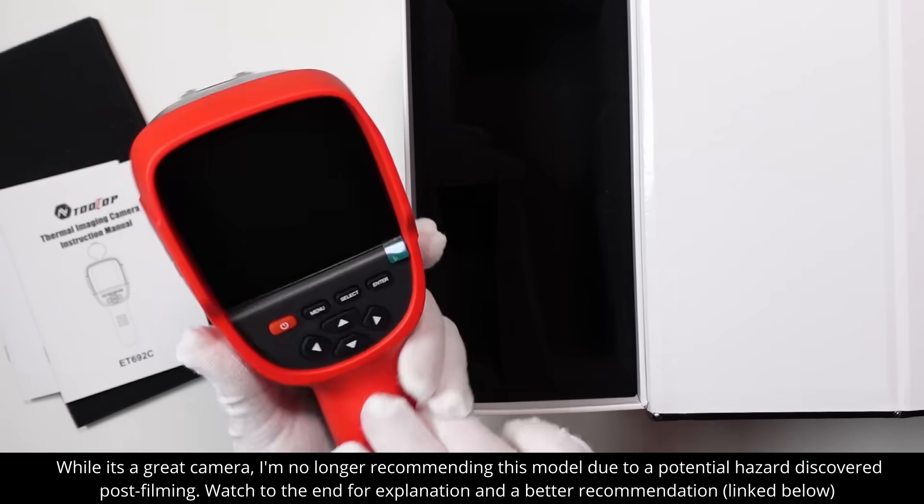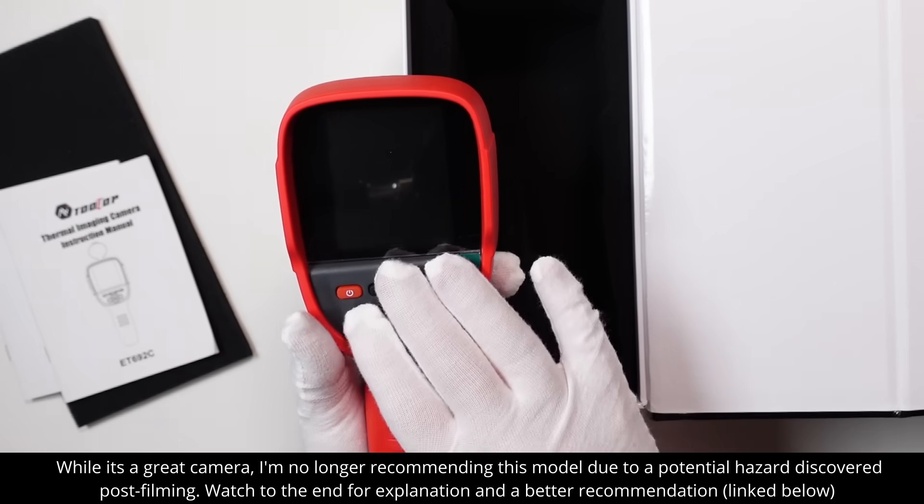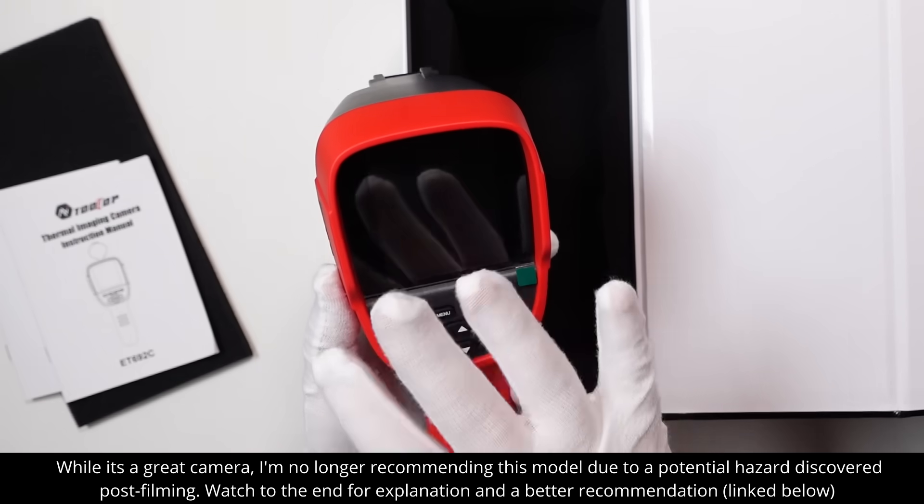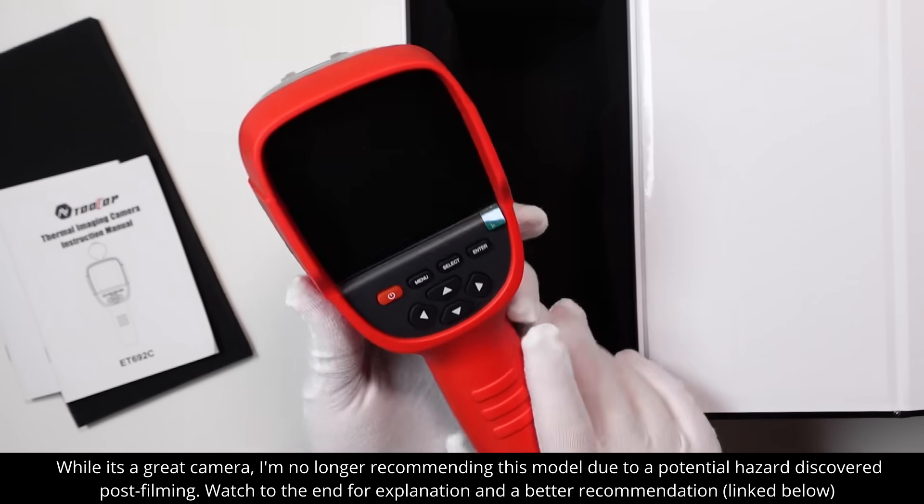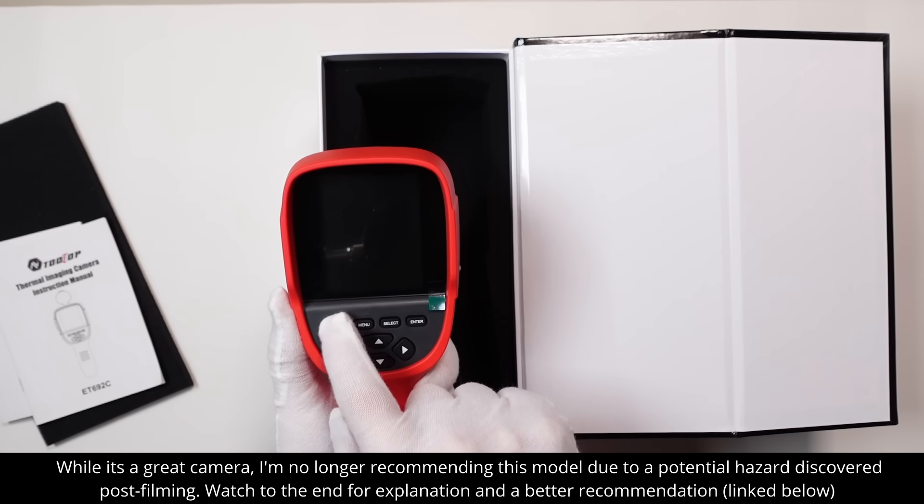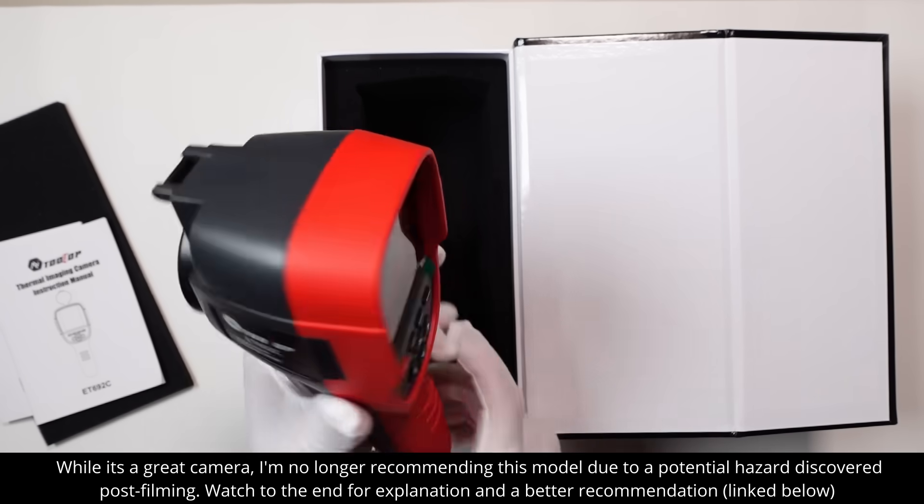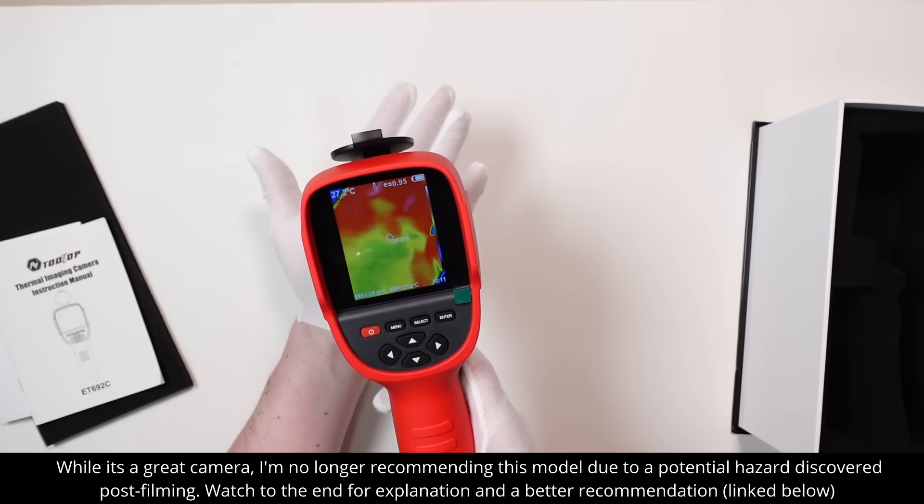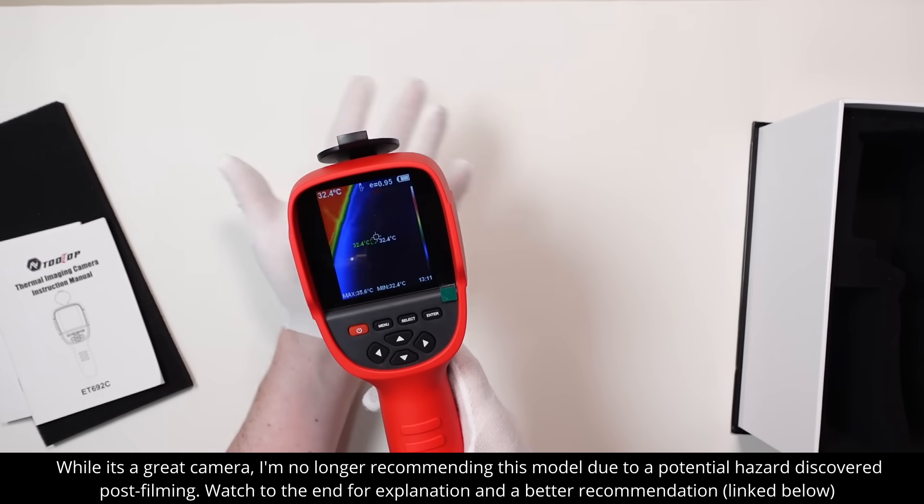And of course, this nice big 3.2 inch LCD screen with both a visible light and infrared mode, so you can mix between to get the perfect combination image. We can switch it on here. Takes about five or ten seconds to boot up when you turn it on. We need to remove the cover on the lens here. First impressions were very good for this device. It works well.